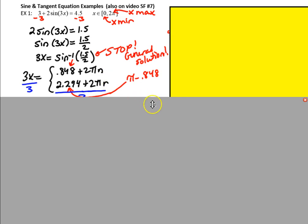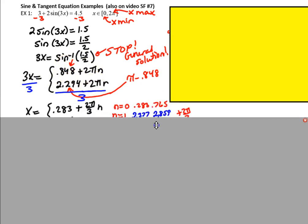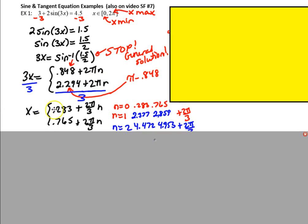Then I can continue to solve, and the only thing left to do is to divide both sides by 3. So when I divide both sides by 3, I divide both of these numbers by 3, and I divide the period by 3. So we end up with x equals 0.283 plus 2π/3n and 0.765 plus 2π/3n for the period. It's probably preferable to leave it in fraction form like this.